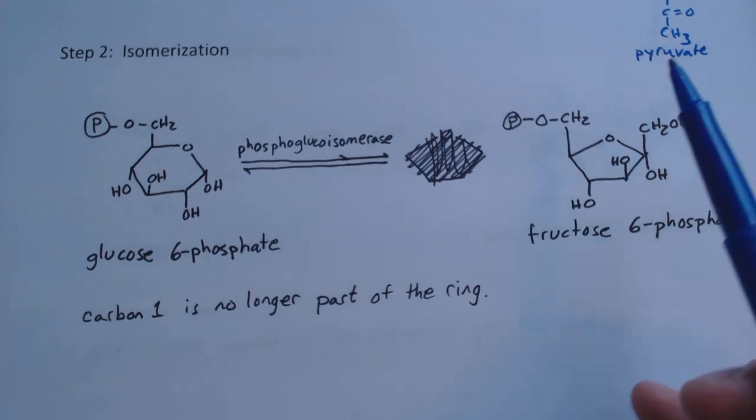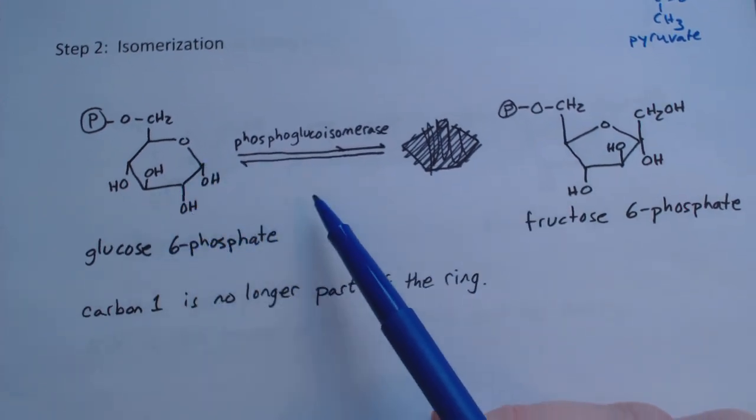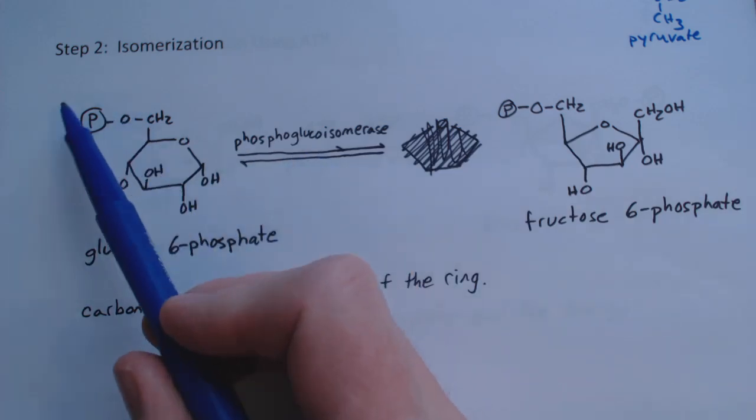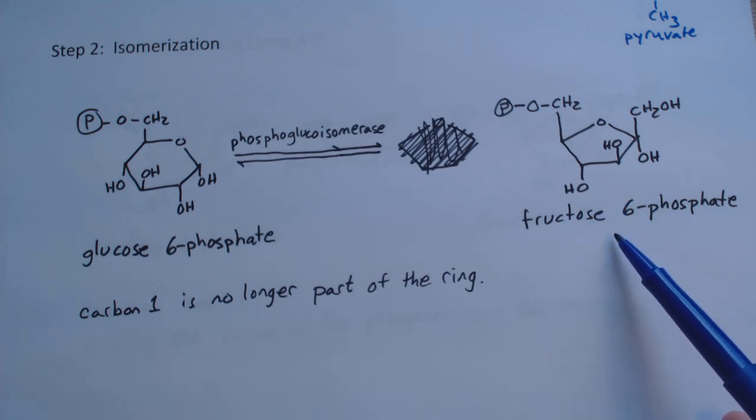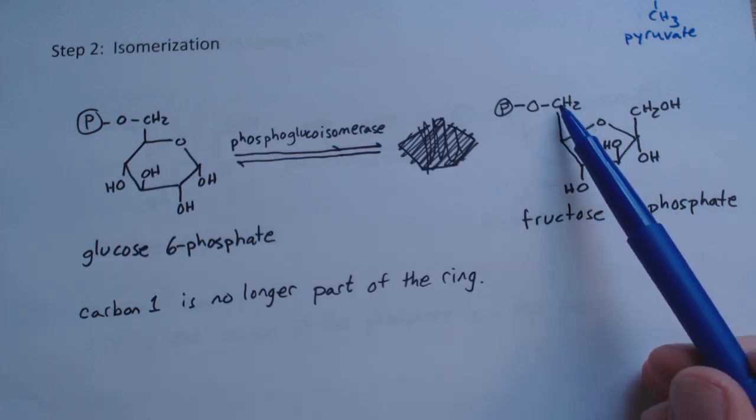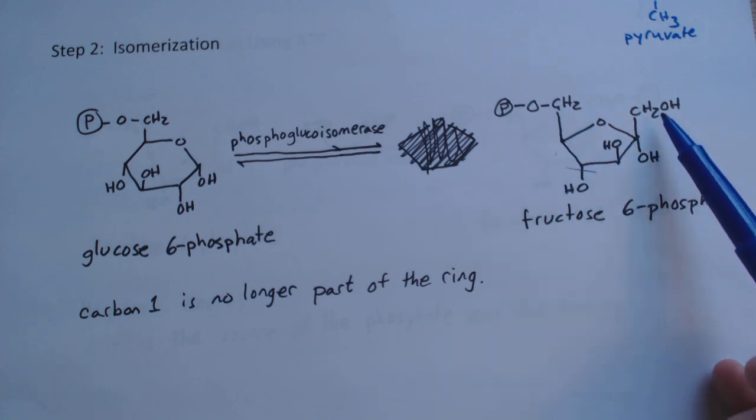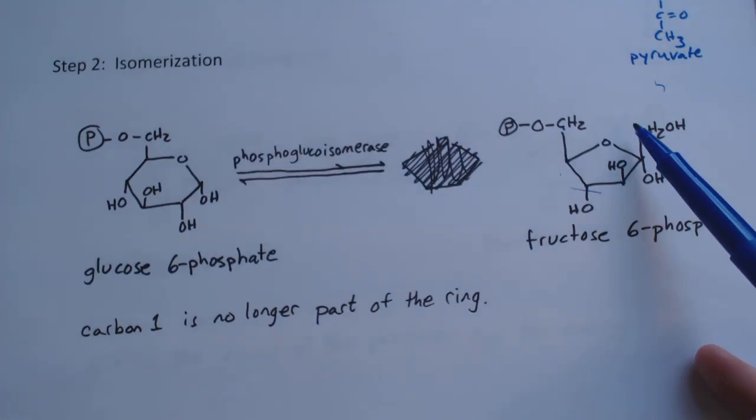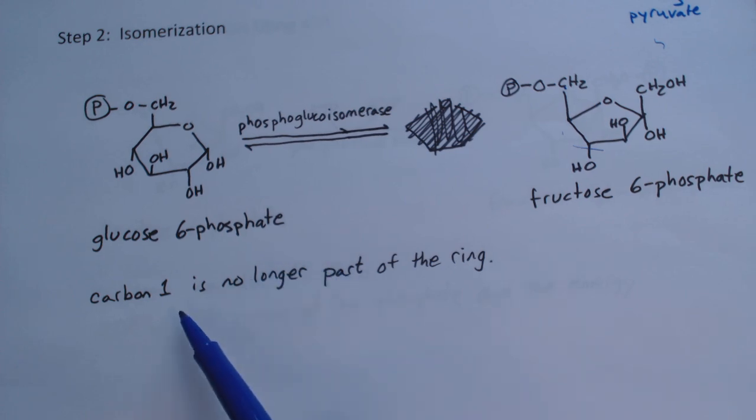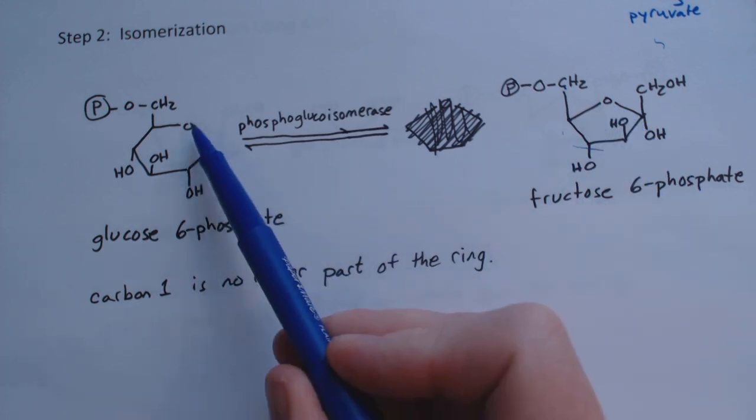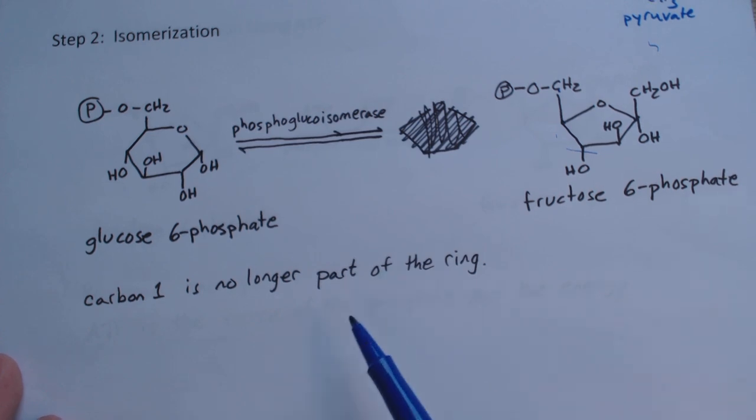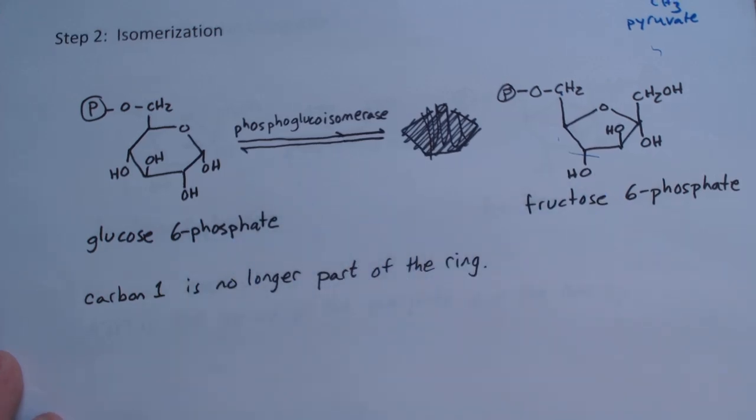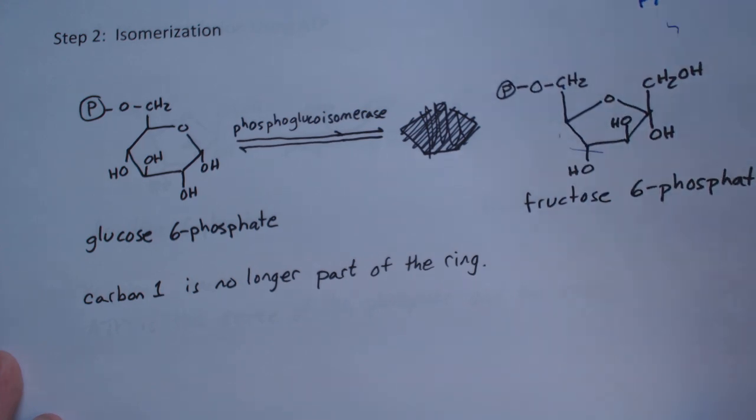We have glucose-6-phosphate, and through the enzymatic action of phosphoglucoisomerase, we create fructose-6-phosphate. Now we have two carbons above the ring on each end - it's looking more symmetrical. Carbon one is no longer part of the ring, and this oxygen is now in the center, adding symmetry. Sometimes for individual steps there's not too much to say, but you need to see two or three steps in a row to see what's actually going on.